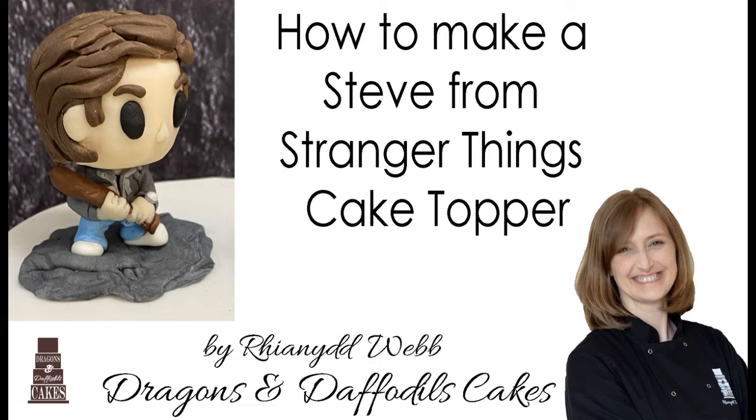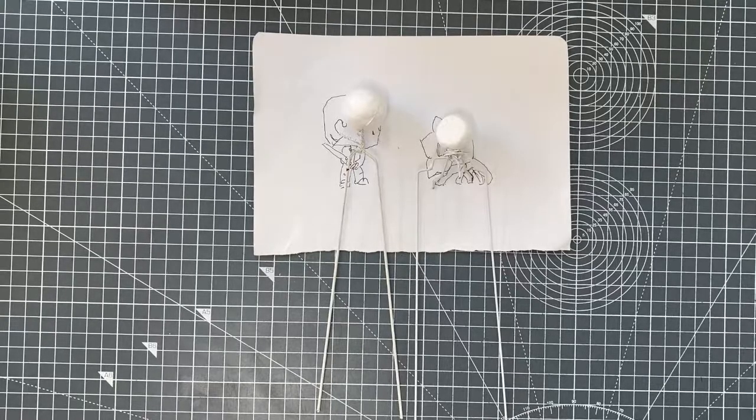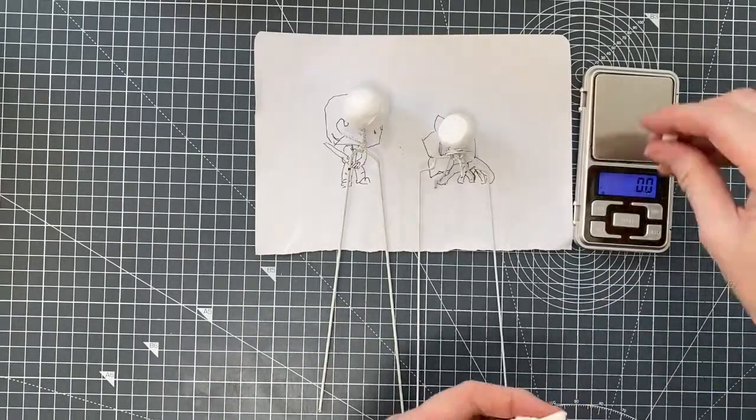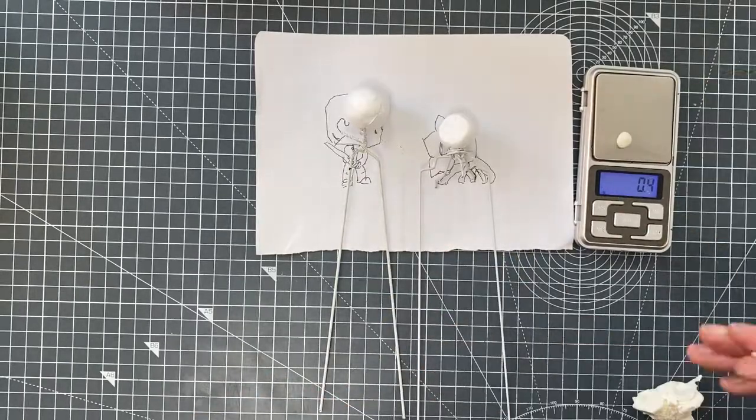Hello and welcome to my video for how to make Steve from Stranger Things. I hand drew some templates for myself and I use polystyrene and 18 gauge wires in order to make some armatures.